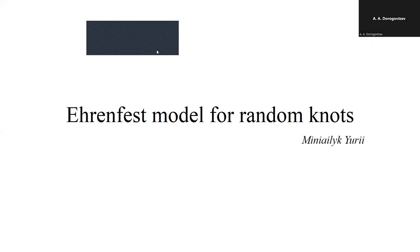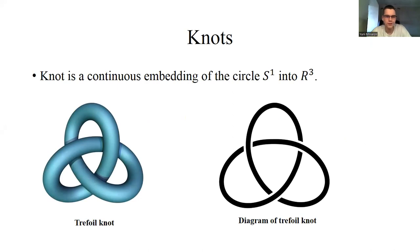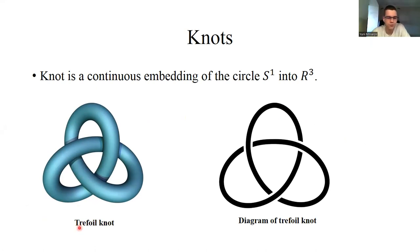The next speaker is Yuri Miyark from Odessa Richelieu. The title of the talk is a fast model for random knots. A knot is defined as a continuous embedding of the unit circle S¹ into space R³. An example is the well-known trefoil knot. We study diagrams of knots — projections onto the plane with crossing information indicating which strand passes over or under.